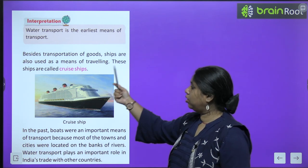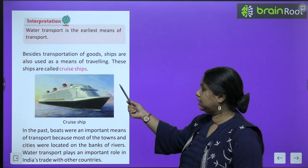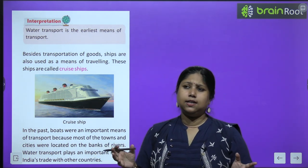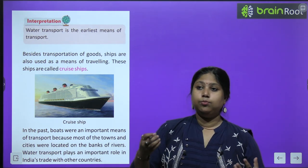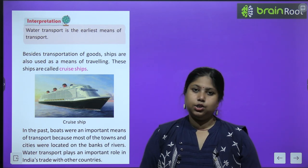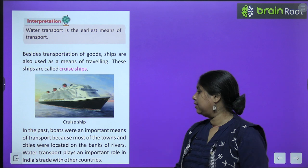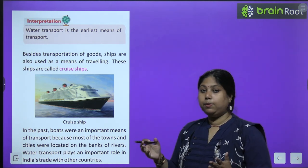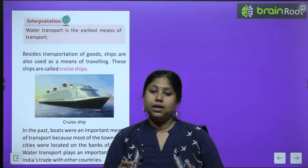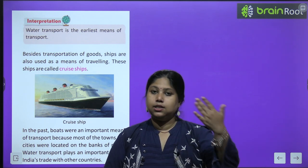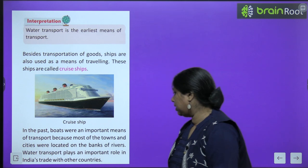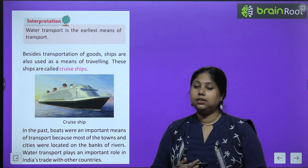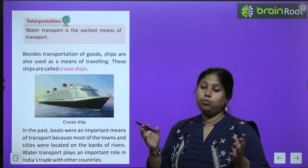Besides transportation of goods, ships are also used as a means of travelling. Ships on which people travel are called cruise ships — they are very luxurious, with rooms, swimming pools, bedrooms, dance rooms, and theaters. In the past, boats were an important means of transport because most towns and cities were located near rivers. Water transport also plays an important role in India's trade with other countries.